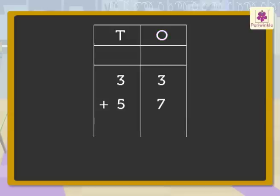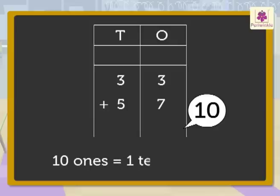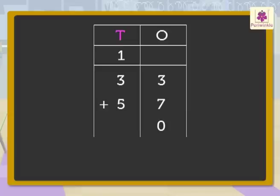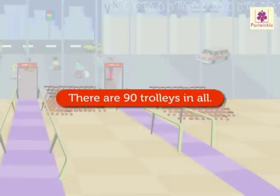Add the 1s: 3 plus 7 is equal to 10. Now, regroup 10 to get 1 ten and 0 ones. Carry 1 ten to the 10s column and write 0 in the 1s column. Now, add the 10s: 1 plus 3 plus 5 is equal to 9. Write 9 in the 10s column. Thus, 33 plus 57 is equal to 90. There are 90 trolleys in all.